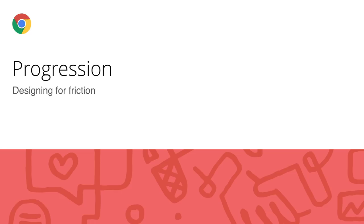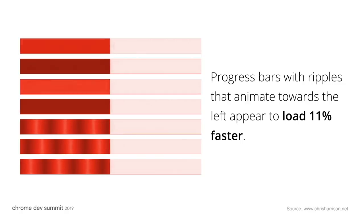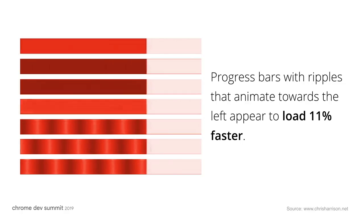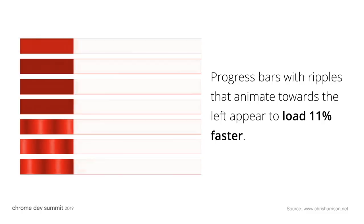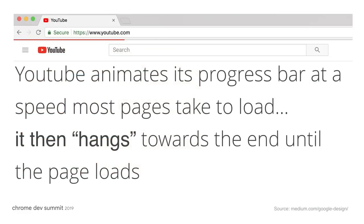Progression is really key here as well — giving users some indication of how long something takes to load. One interesting research finding is that ripples that animate towards the left feel faster than other forms of progression. In YouTube, what we do is stagger the progress bar across the top just a little bit, because it gives this anticipation and hanging that makes it feel like the site is loading. This is a small perceptive hack that makes the experience feel like it's actually in progress.